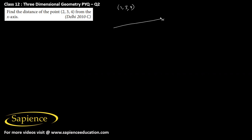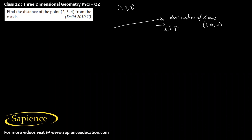Find the distance of the point (2, 3, 4) from the x-axis. Suppose this is the x-axis. The direction ratios of the x-axis are 1, 0, 0. Therefore, if b1 vector is along the x-axis, that should be i-cap.